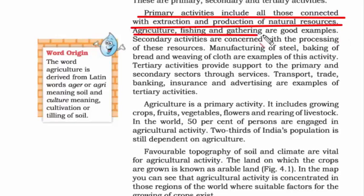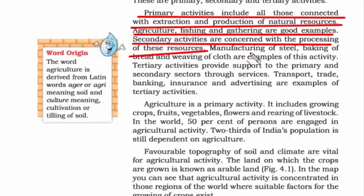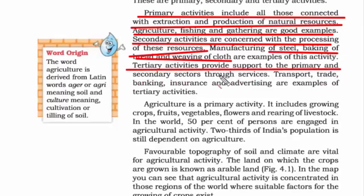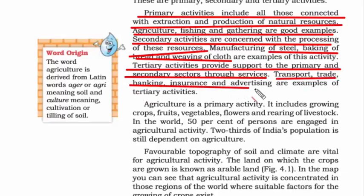Some examples of primary activity are agriculture and fishing. Whatever we get from nature cannot be consumed directly — it needs to be processed and refined. So secondary activity refers to the processing of those primary resources. Examples include manufacturing of steel, baking of bread, and weaving of cloth. Tertiary activity refers to support to the primary and secondary sectors through services — most jobs in government, private sector, MNCs, or offices are support services. Examples include transport, trade, banking, insurance, advertising, etc.